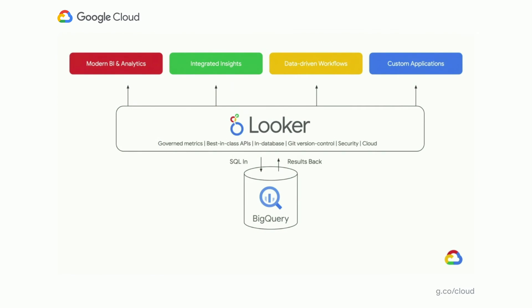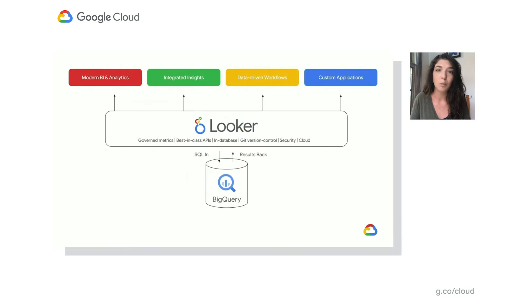This is where Looker comes in. Looker is a data platform, and it's going to sit directly on top of your SQL database — in this case, directly on top of our public datasets available in BigQuery. Looker is powered by a Git version-controlled modeling layer that we call LookML. LookML allows us to create a data dictionary of all of our different metrics using raw SQL to define those calculations. Then business users who are not familiar with writing SQL can jump into the Looker platform, slice and dice data, create new reports, export the data, schedule it — they're empowered to ask new questions without needing to rely on a technical resource.